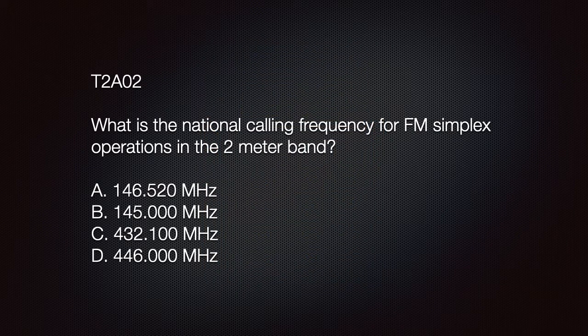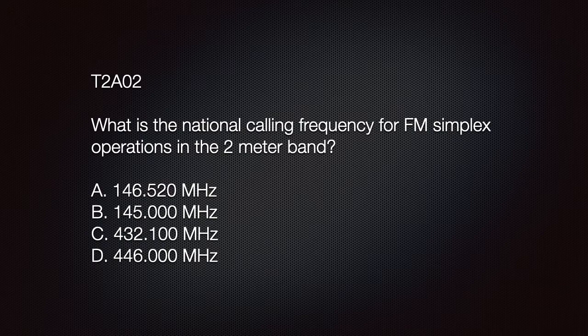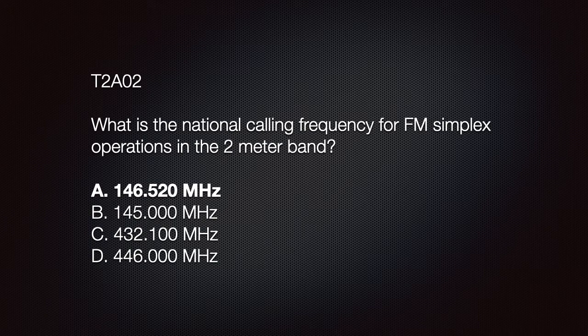On the exam: What is the national calling frequency for FM simplex operation in the two meter band? A: 146.52 megahertz; B: 145.000 megahertz; C: 432.100 megahertz; or D: 446.000 megahertz. You can eliminate answers C and D because they are in the 70 centimeter band. The correct answer is A, 146.520 megahertz.